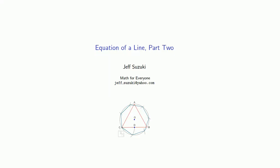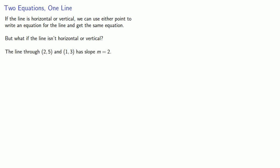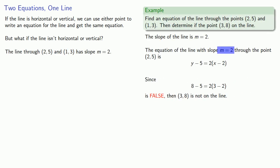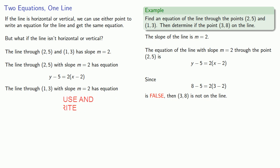Let's take a look at another form of the equation of a line. If a line is vertical or horizontal, we've seen that we can use either point to write an equation for the line and get the same equation. But what if the line isn't horizontal or vertical? If we consider the line through (2, 5) and (1, 3), we found the slope and then wrote down the equation of the line using the point (2, 5). But what if we used the other point, (1, 3)? We could still write down the equation of the line, but it looks different, even though they are the same line.